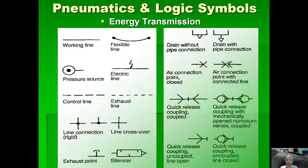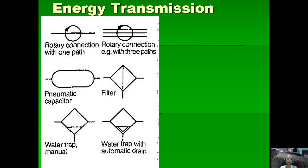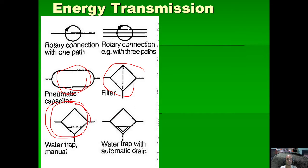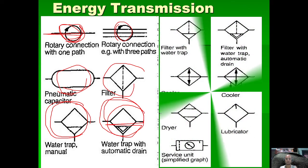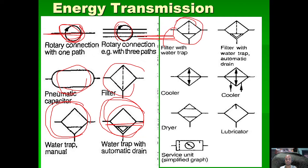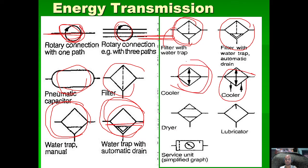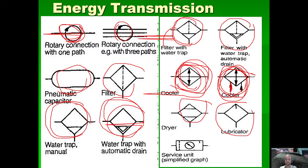For energy transmission we have the pneumatic capacitor or reservoir, filter, water trap or air dryer, and water trap with automatic drain or air dryer with automatic drain. We have rotary connection with one path and rotary connection with three paths. There is also a filter with dryer and manual drain, filter with dryer and automatic drain, a cooler, a dryer, a lubricator, and a service unit simplified.